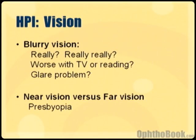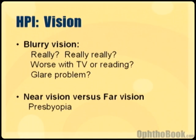Another big question is whether this is a problem with near vision versus far vision. After about age 40-45, people's lenses start to harden and they have a hard time focusing on near objects — they develop presbyopia and will need reading glasses.